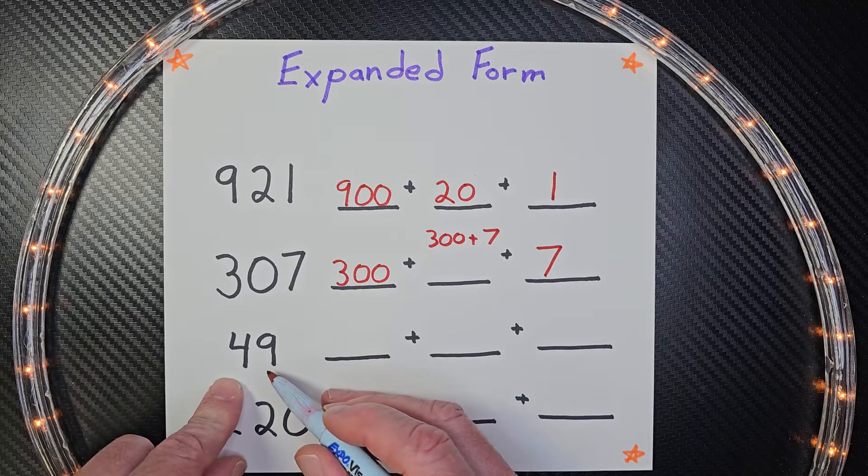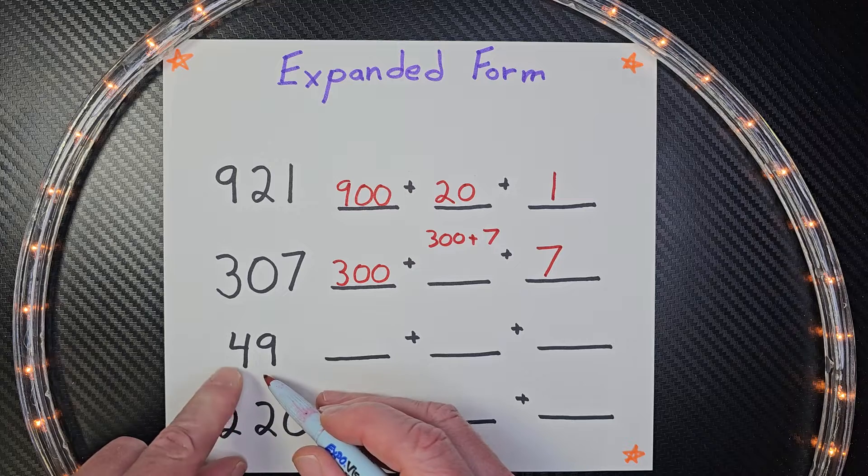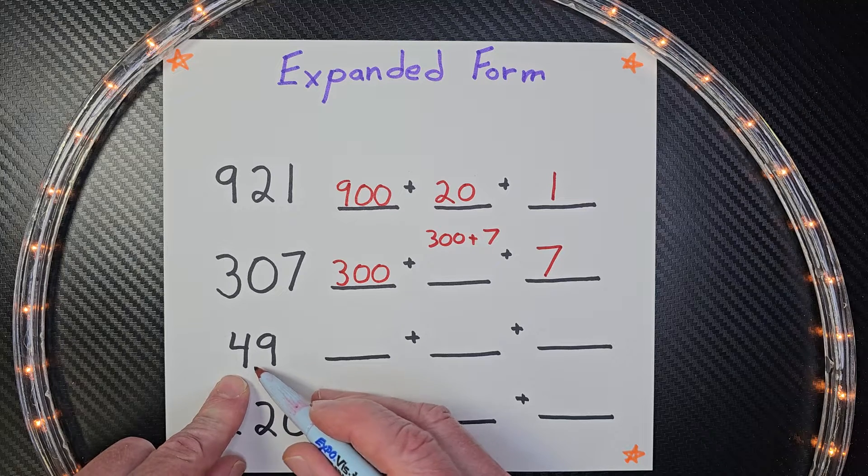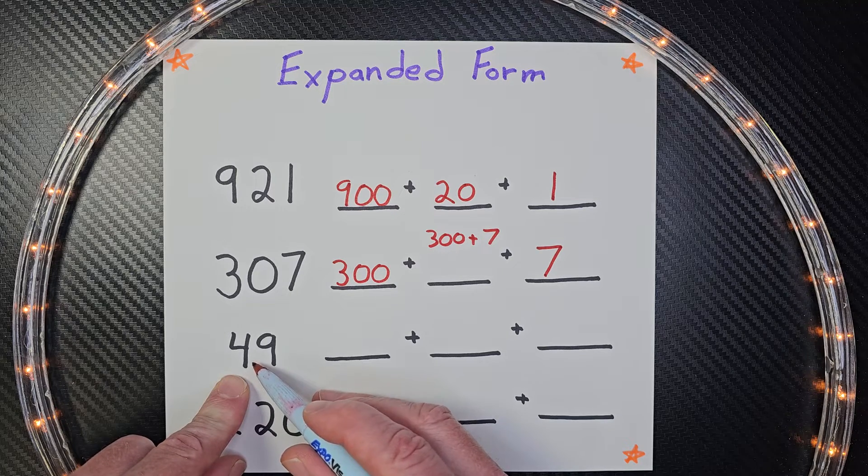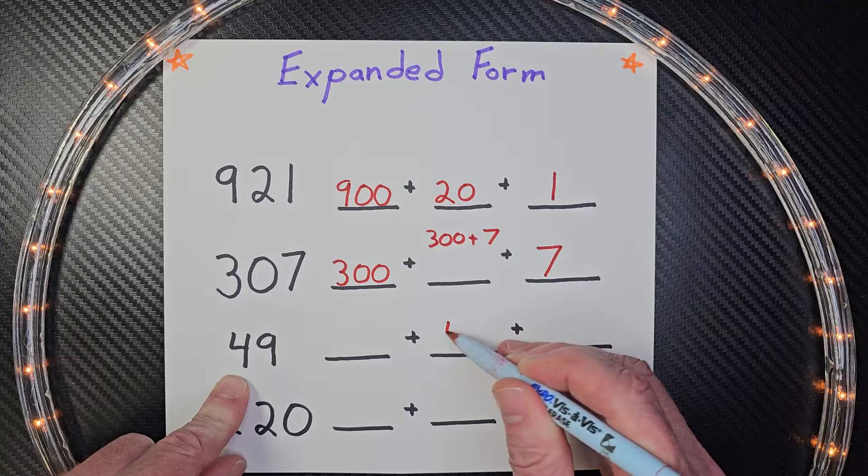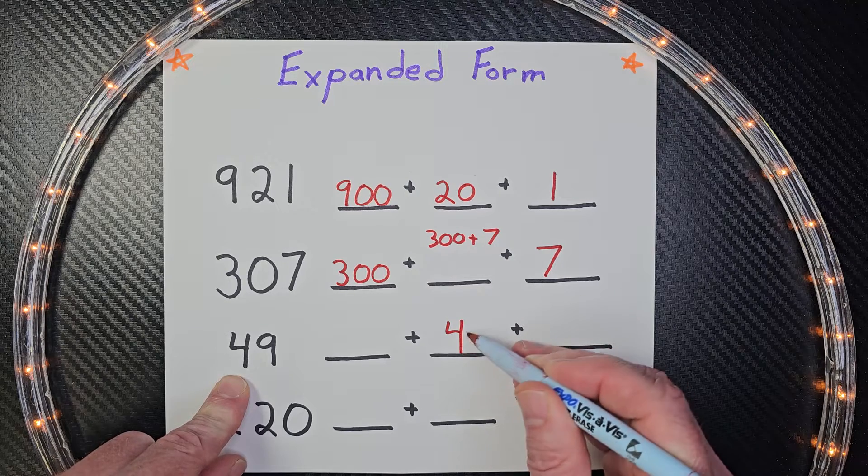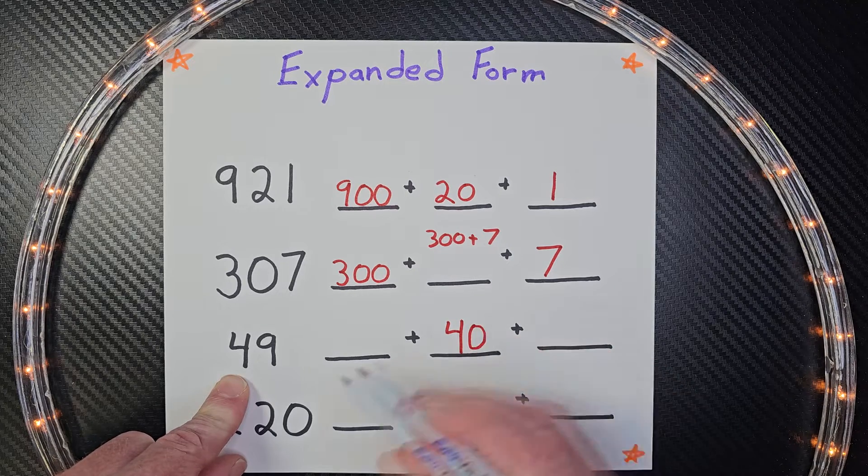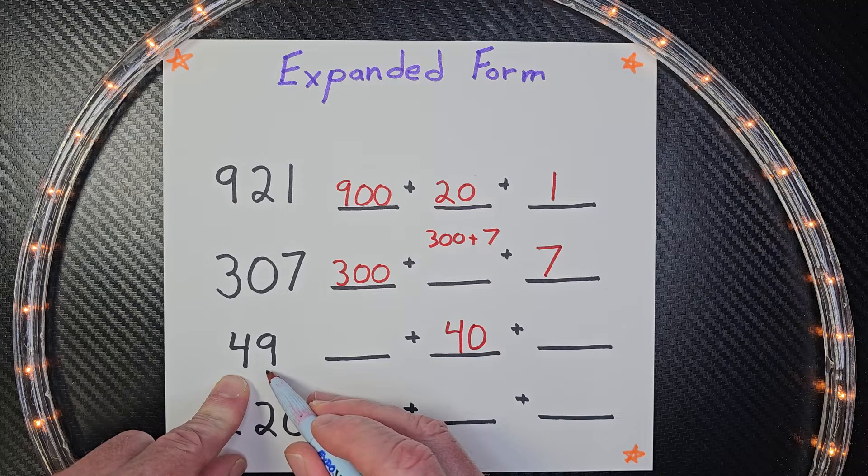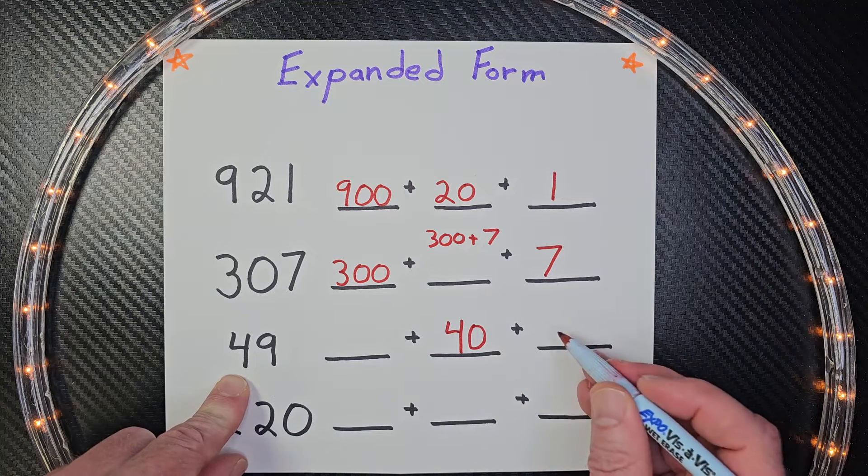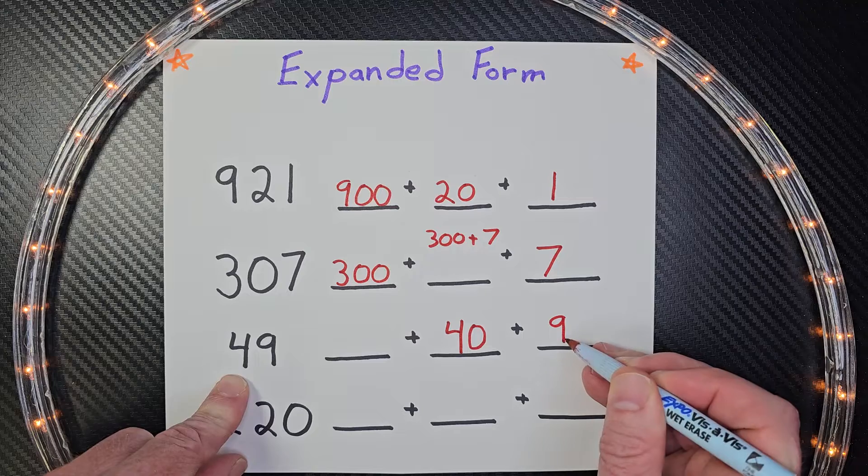All right, let's go ahead and do this one. We have a 4. And what place value is that in? That is in the tens place. So we would put that right here in the tens place. And that would be 40. And then the next number would be 9. That's just in the ones place. And we would write it just like that, 9.